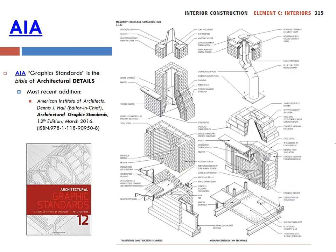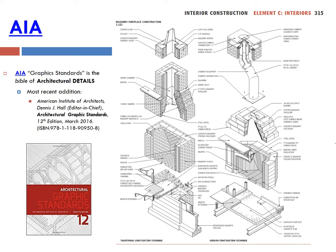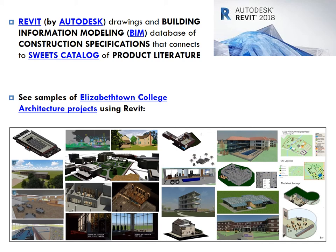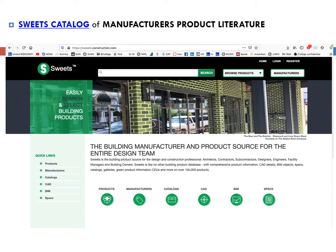Here's an example detail out of the AIA Graphic Standards. Come back and take time to click on the Elizabethtown College Architecture Projects link and view quite a few student projects in there over 15 years. Do take the time to come back and look at the Suites catalog. Students will have exercises in Revit that draw on the Suites catalog details and the CAD and BIM.